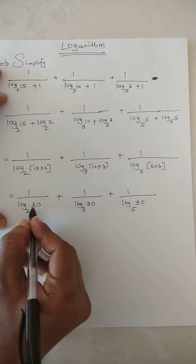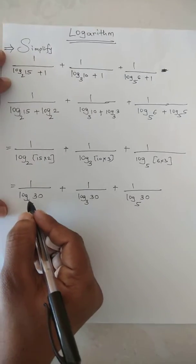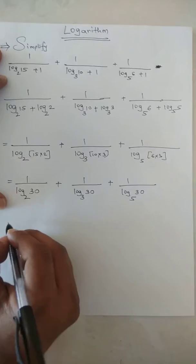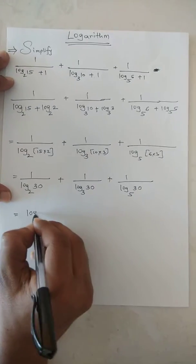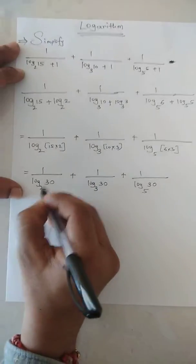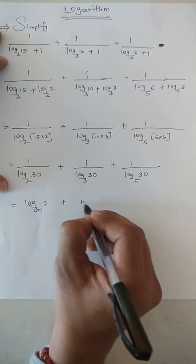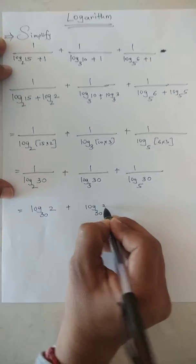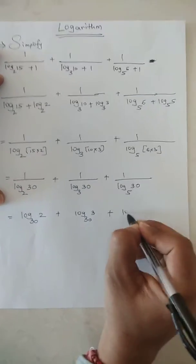Now we're going to use the change of base formula. So it will equal log base 30 of 2, plus log base 30 of 3, plus log base 30 of 5. Now with base 30, we have log a plus log b plus log c